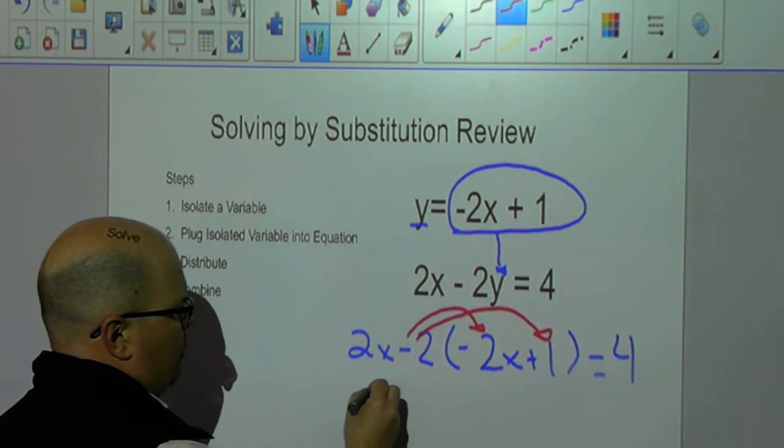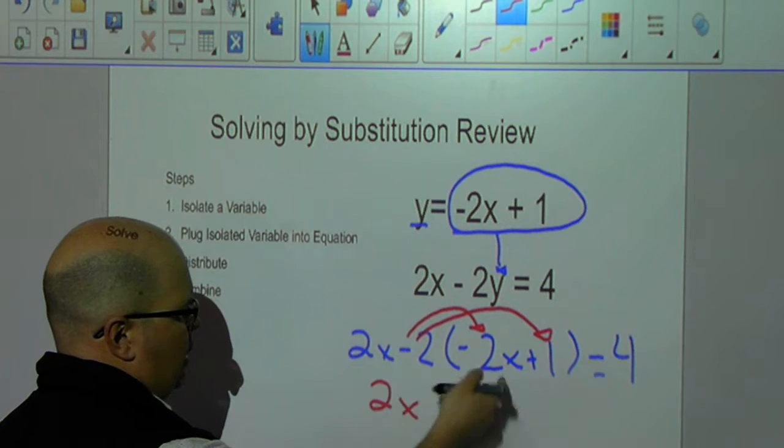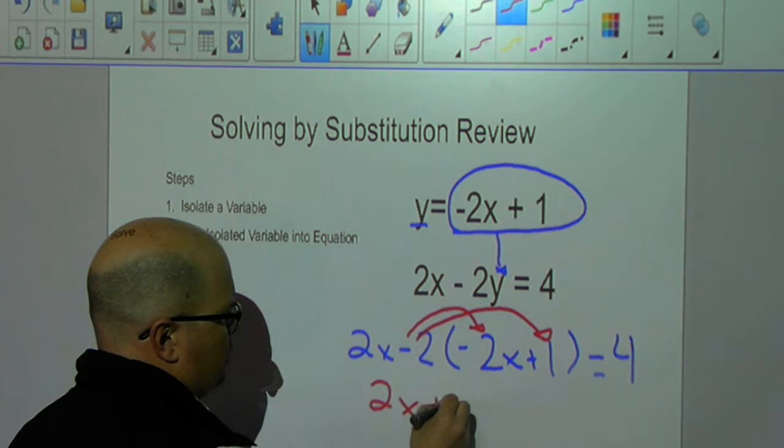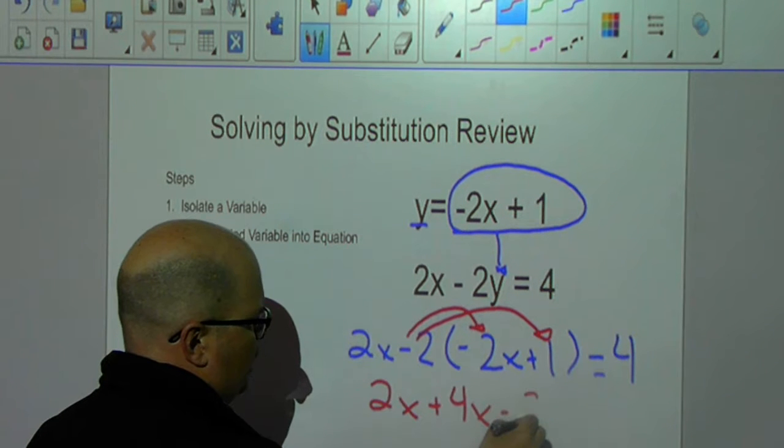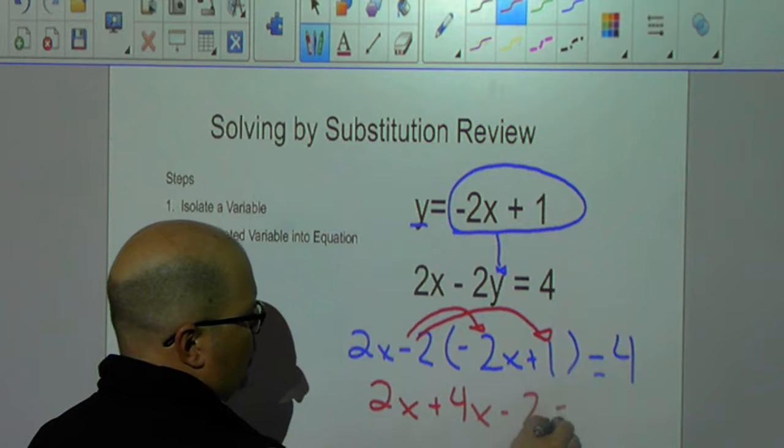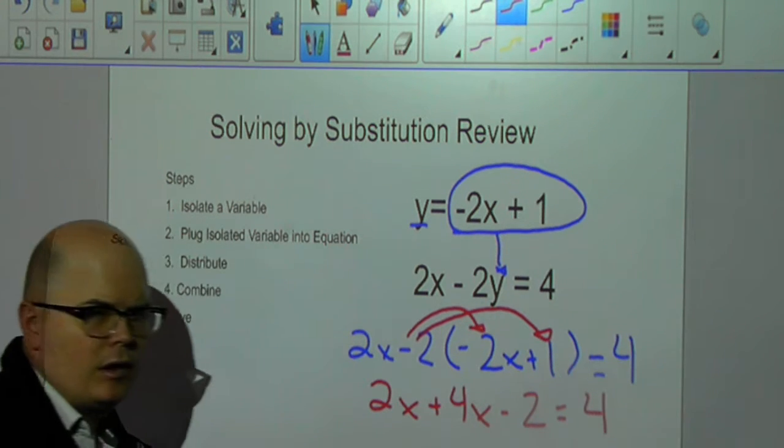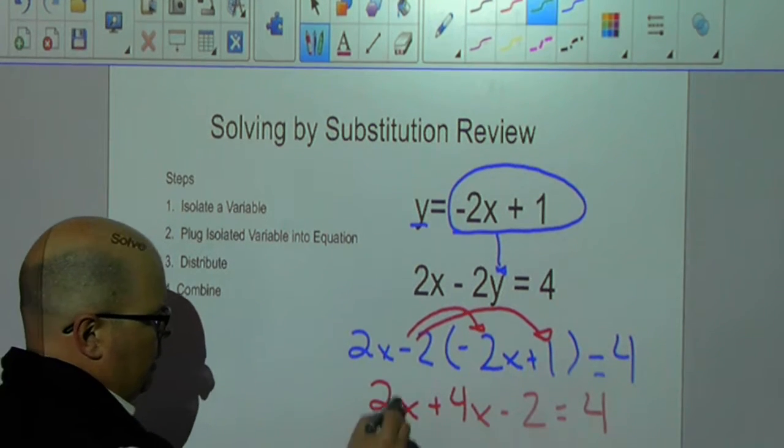Now we're going to have 2x, a negative and a negative is a positive, plus 4x, a negative times a positive is a negative 2 equals 4. I've distributed, so now I'm going to combine.